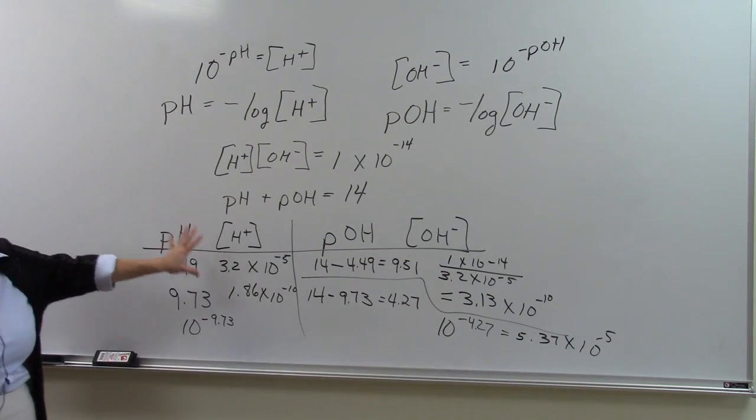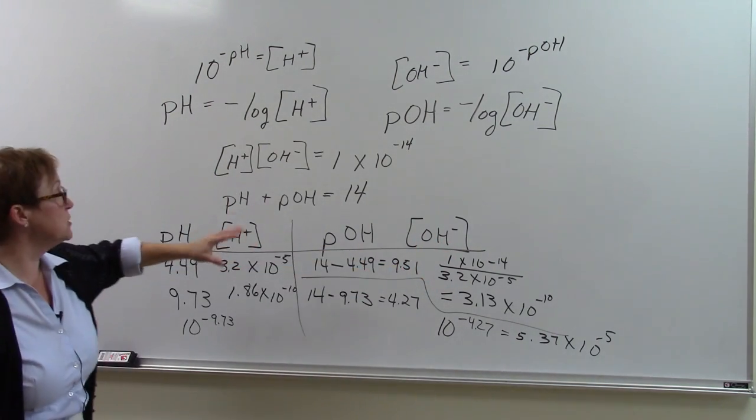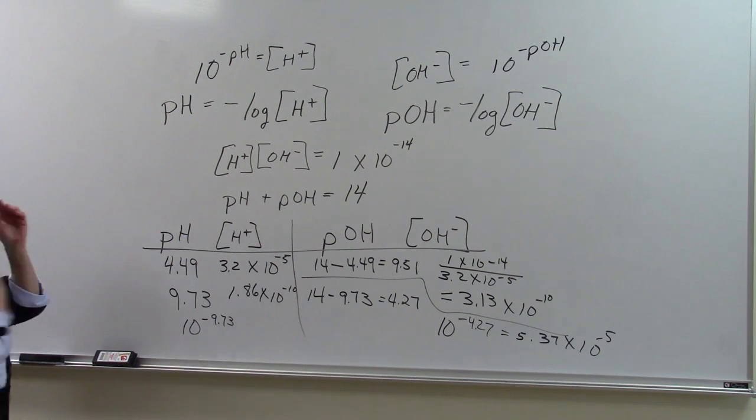So that's how we can get, given any number—pH, pOH, hydrogen ion or hydroxide ion concentration—we can go back and forth from one to the other.